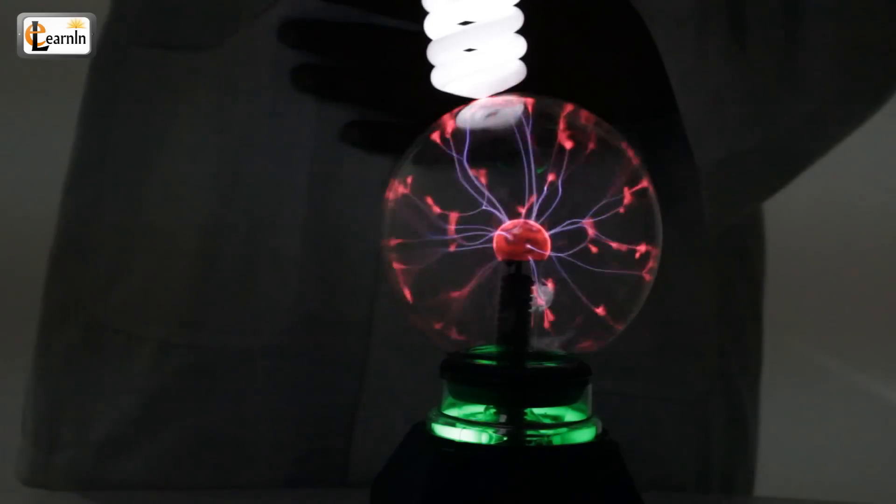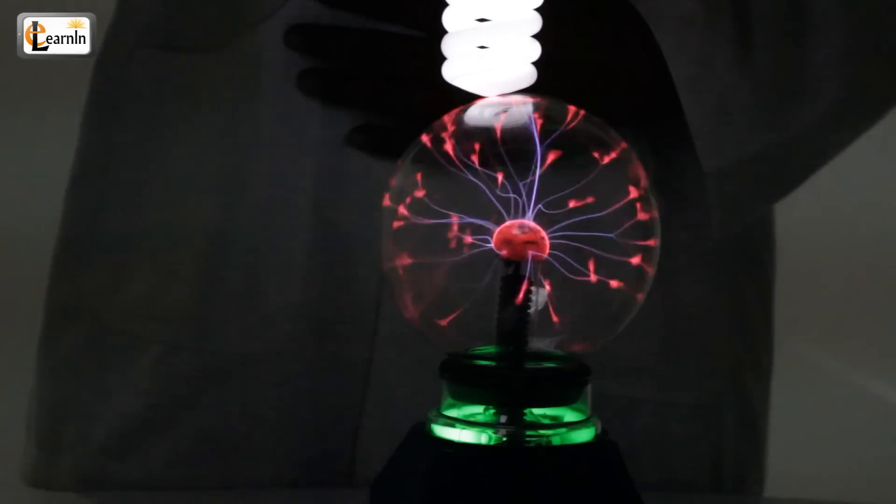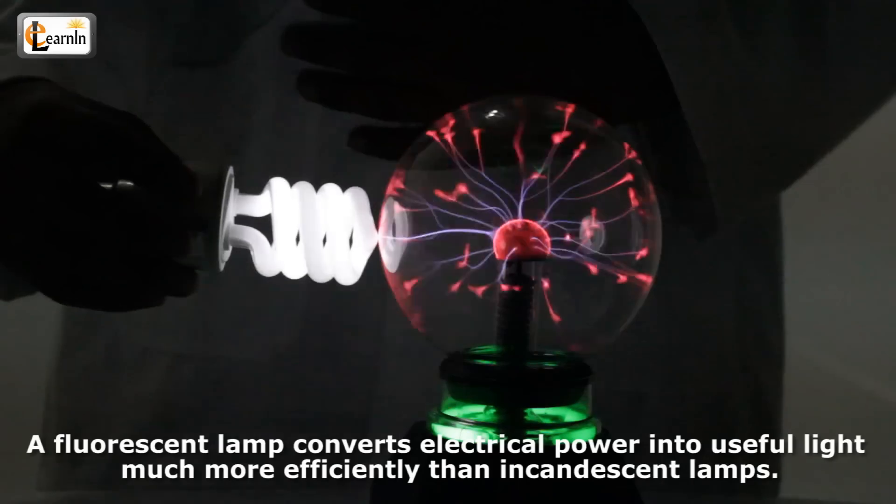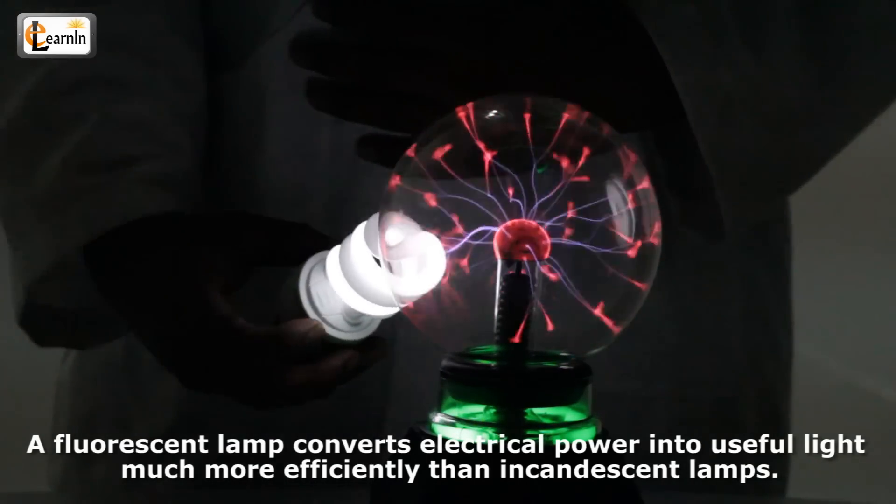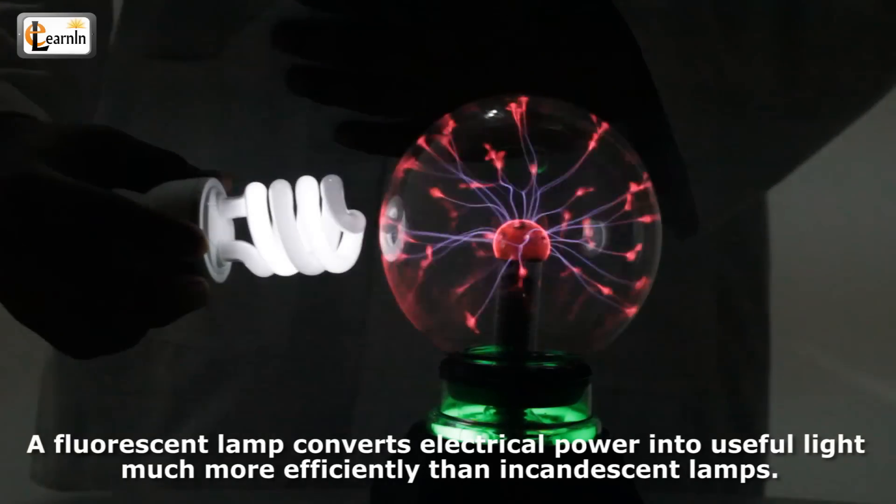This ultraviolet light then causes a phosphor to fluoresce, producing visible light. A fluorescent lamp converts electrical power into useful light much more efficiently than incandescent lamps.